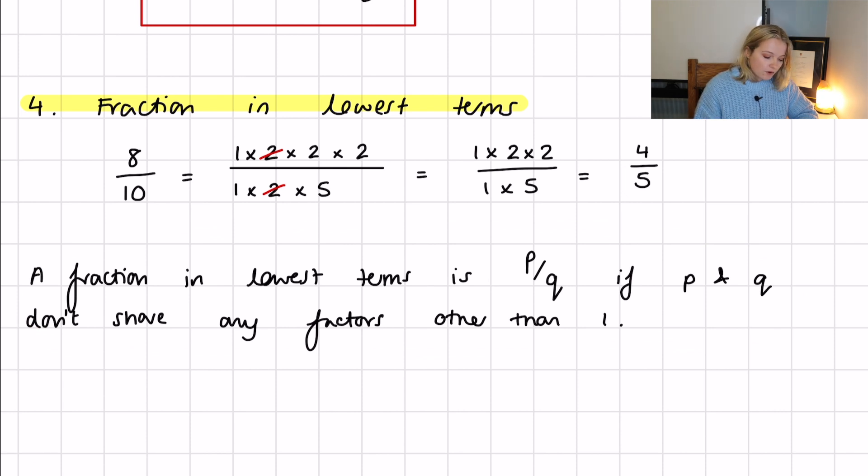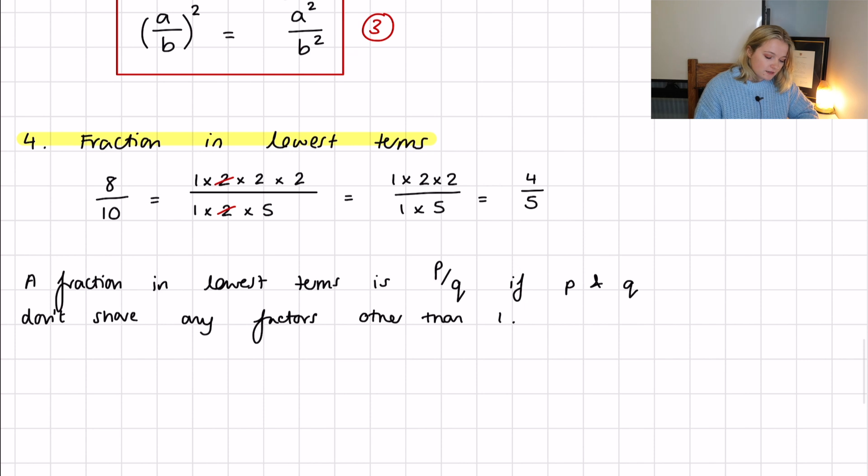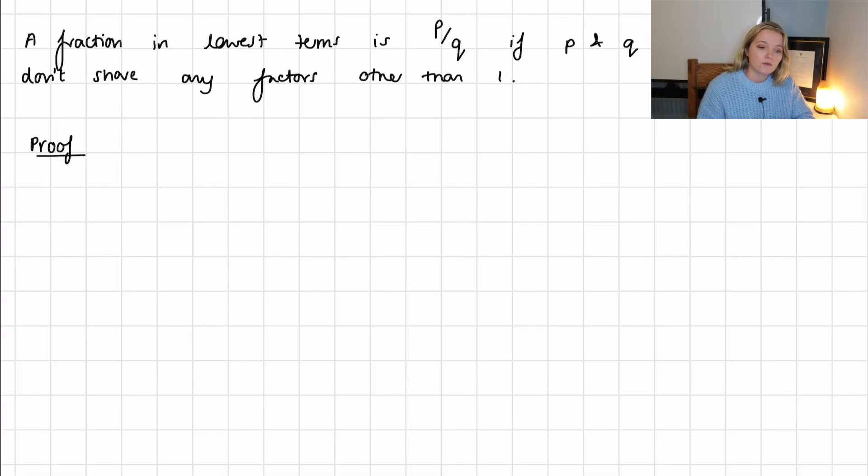Now we jump into the proof. We're going to use proof by contradiction — a very common method in mathematics. We start by assuming the square root of 2 is rational, then derive a contradiction, which allows us to conclude it must actually be irrational.